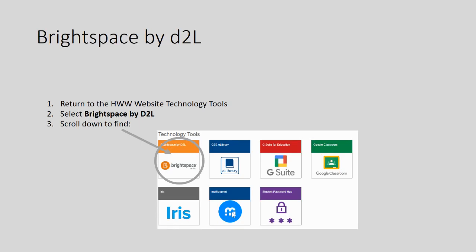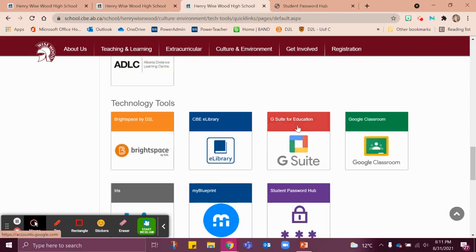Let's talk about Brightspace by D2L. D2L is a space where you're going to find all the important information for your courses that your teachers provide you. Let's get familiar with that. You can find this in one of two ways: you can type Brightspace by D2L CBE in your Google browser, or we can go back to the Henry Wisewood Technology Tools page. Here we are back at the school website — under Technology Tools you'll see Brightspace by D2L.